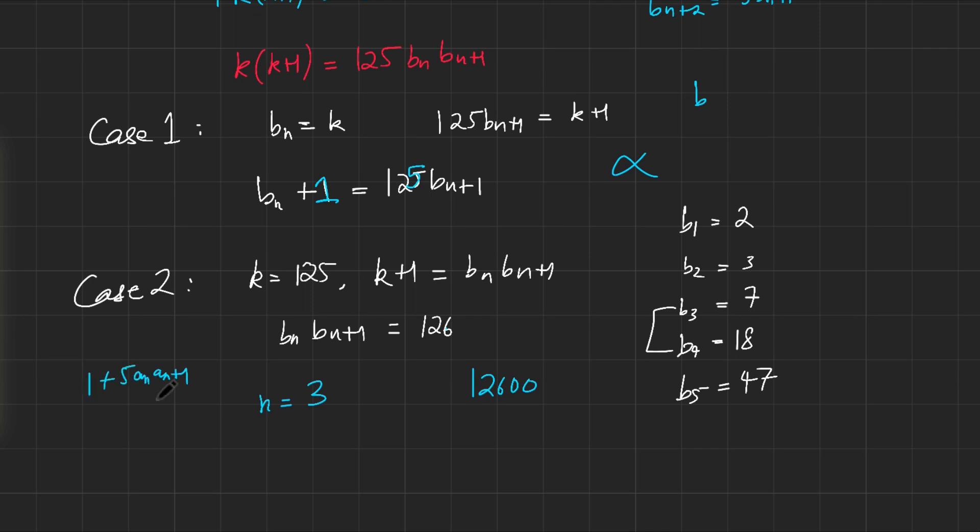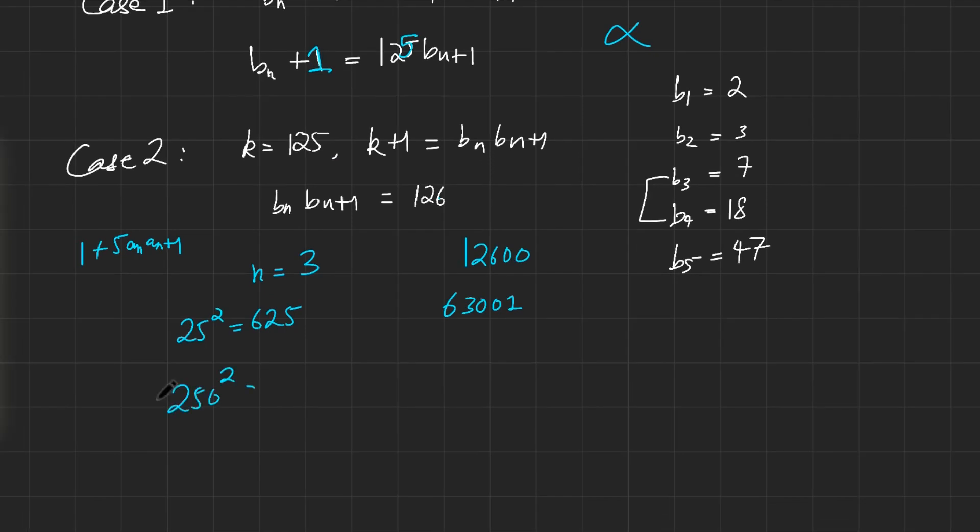When we're checking whether 1 plus 5aₙaₙ₊₁ is the solution, we have 12,600. You've got to multiply this by 5. That would be 63,000. And you add 1. So that would be 63,001. We know that 25 squared is 625. And if I made it 250 squared, that would have been 62,500. So 251 squared now would be 62,500 plus 500 plus 1, which would be 63,001. So we actually do have a square. And it's 251 squared at n equals 3. So we have a solution. We have n equals 3 is a valid solution.